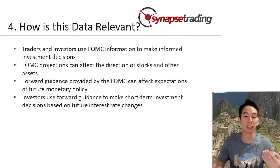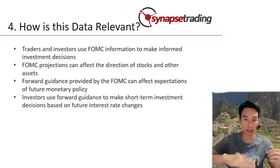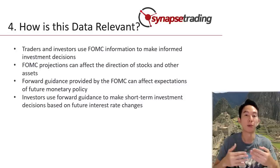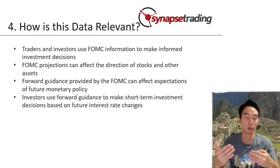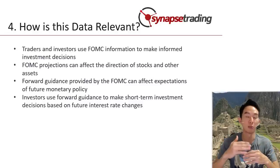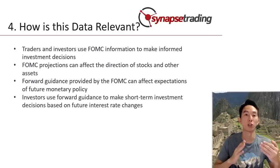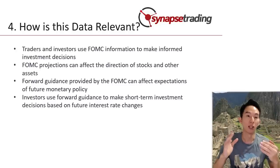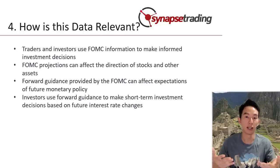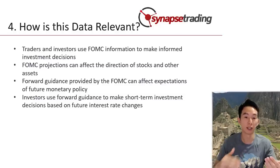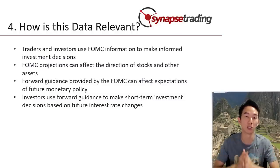For example, if the FOMC states that it expects to keep interest rates low for an extended period, then traders and investors are more likely to invest in stocks as well, because they expect the market to perform well in the short term. On the other hand, if the FOMC says that they are going to raise interest rates soon, then traders and investors will be more likely to invest in bonds, because you're going to get higher returns for your fixed income, and also they expect the market to be more stable in the short term.